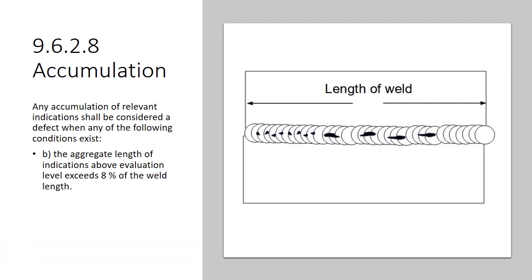Accumulation Part B. The aggregate length of the indications above the evaluation level exceeds eight percent of the weld length. So whatever your length of weld is, and these aggregate, everything adds up, you take your weld length, you multiply it by 0.08, and that's the amount of aggregate you can have. So it would be eight percent of your weld length.